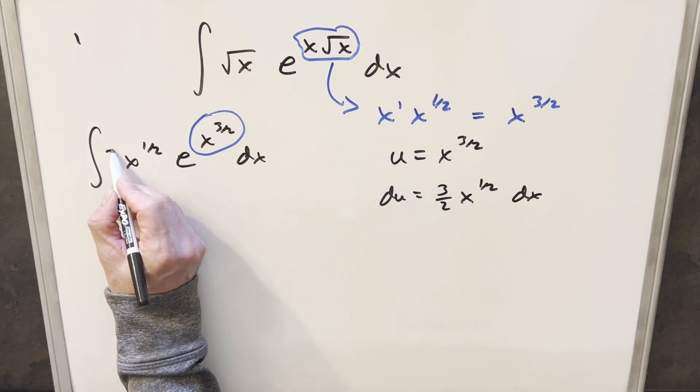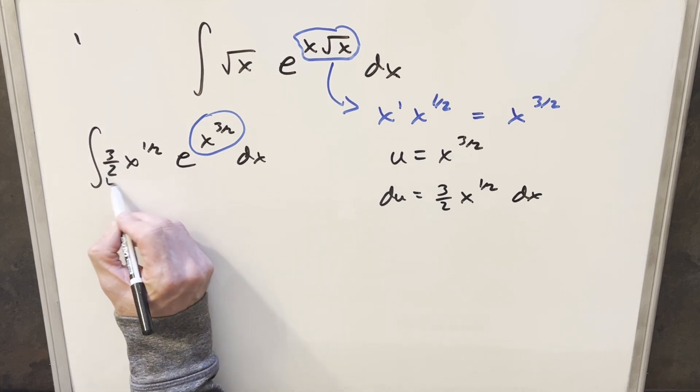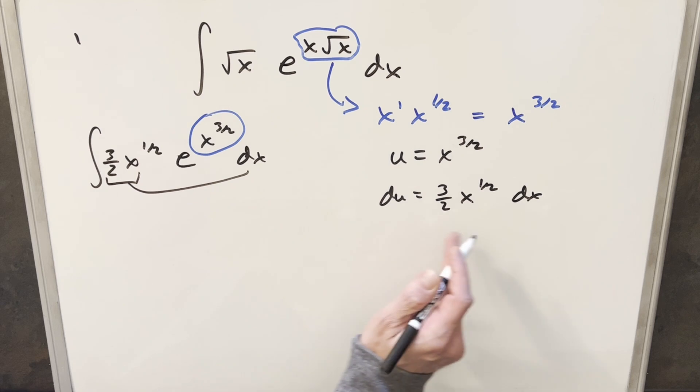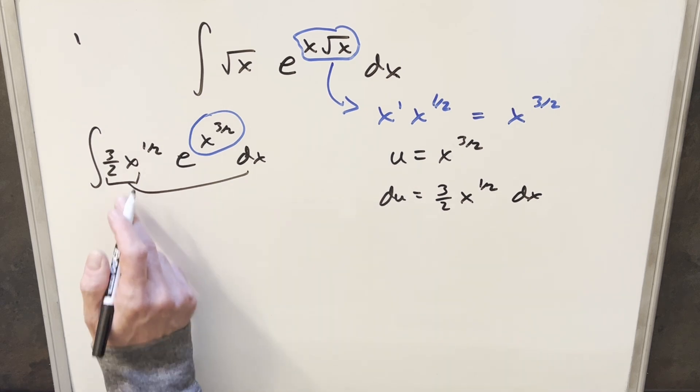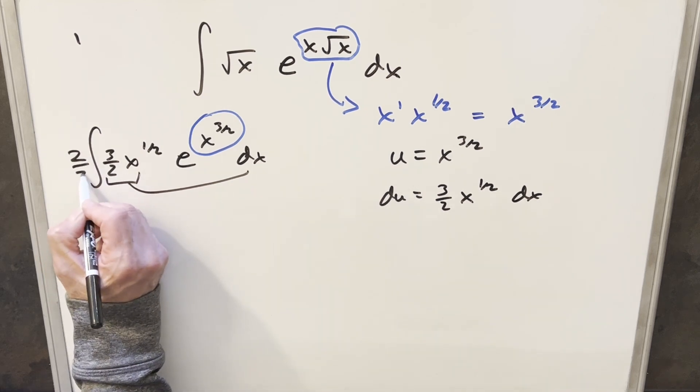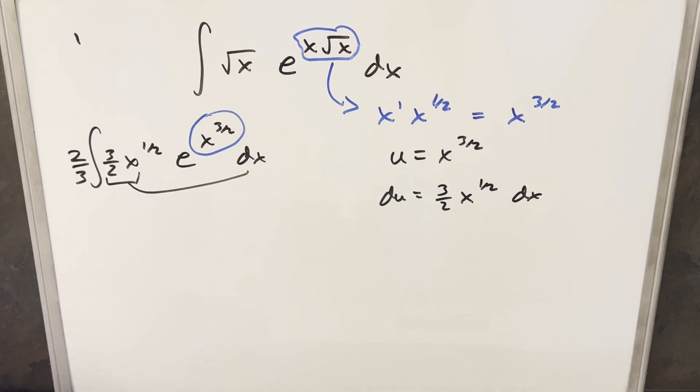But that's not too bad. Now if I multiply here by 3 halves, you'll notice with this, with the dx, we have exactly our du there. I just don't want to change it, so let's multiply by 2 thirds out front. So we're just multiplying by 1.